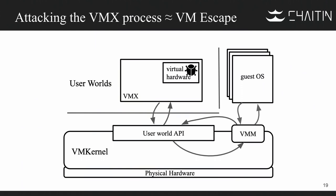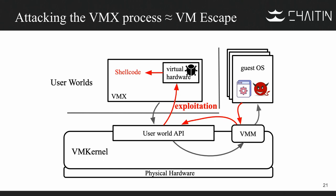So how do we escape from the virtual machine? If there is a vulnerability in the VMX virtual hardware, we can write a driver or an exploit to escape. The driver will communicate with the virtual hardware and exploit the vulnerability — for example, executing shellcode inside the VMX process. That is how we get out of the virtual machine.